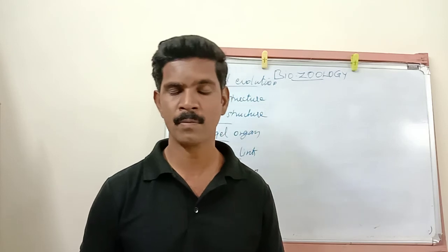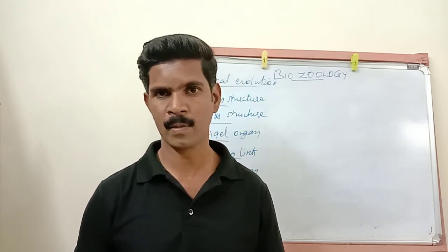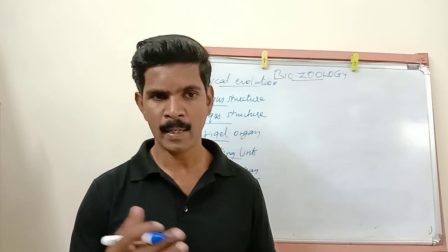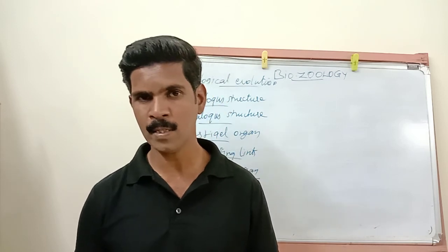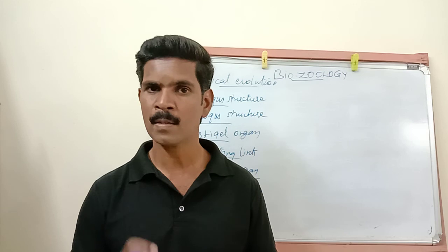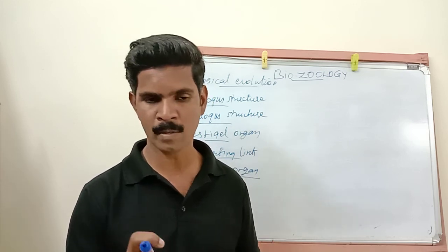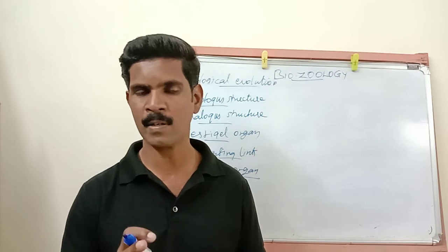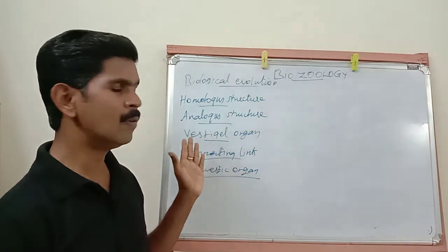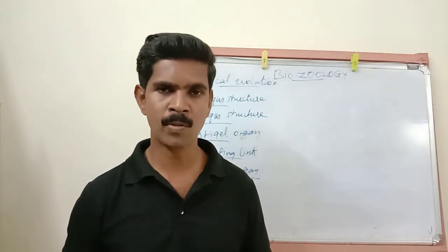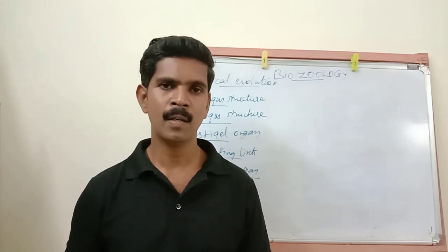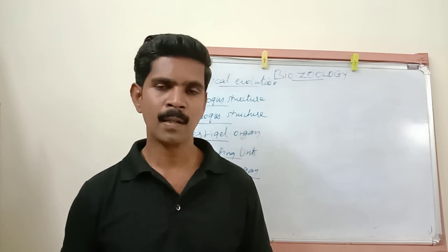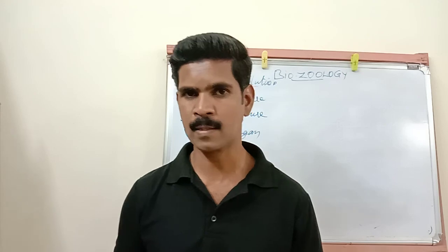Today we have completed: first, one important two-mark topic — protobions; then one important five-mark topic — the Urey-Miller experiment; and now we have completed the evidence for biological evolution, which is a very important five-mark topic. I hope you all understood today's class. Try to study today itself and send your answers to me. Thank you, friends. We will see you in the next class.